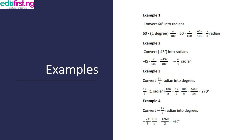Example three: convert 3π over 2 in radians into degrees. We know that one radian equals 180 over pi. So 3π over 2 multiplied by 180 over pi gives us 3π times 180, which is 540π, divided by 2π. Pi cancels, leaving 540 divided by 2, which equals 270 degrees. Therefore 3π over 2 radians equals 270 degrees.